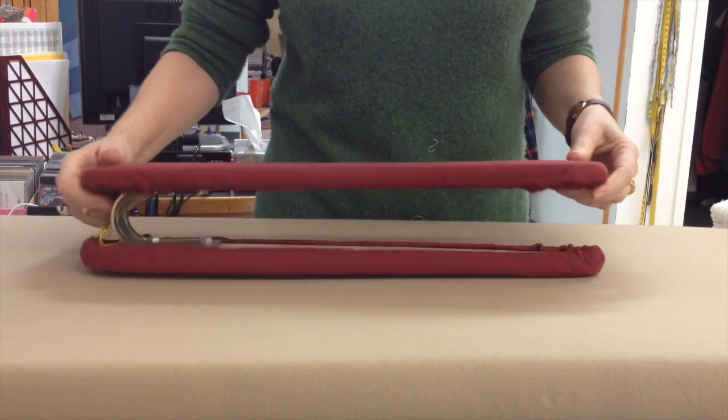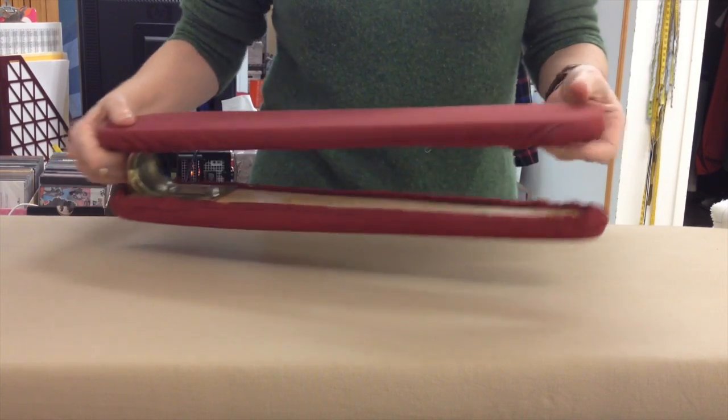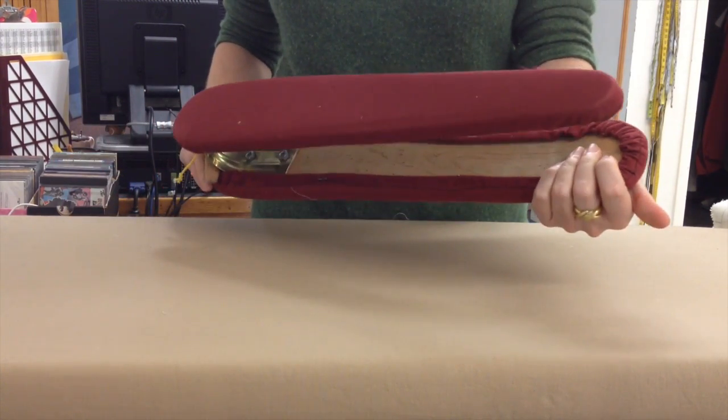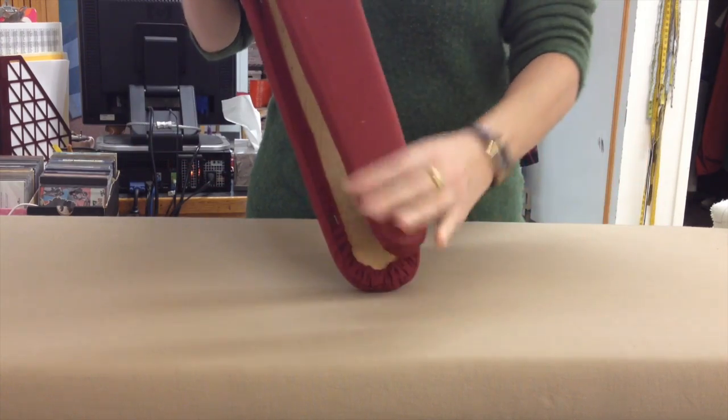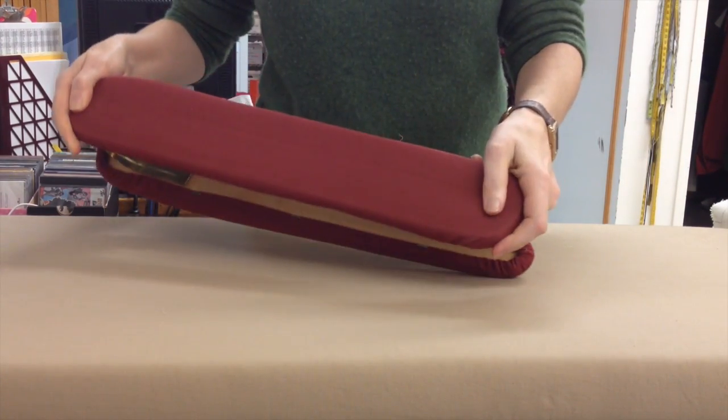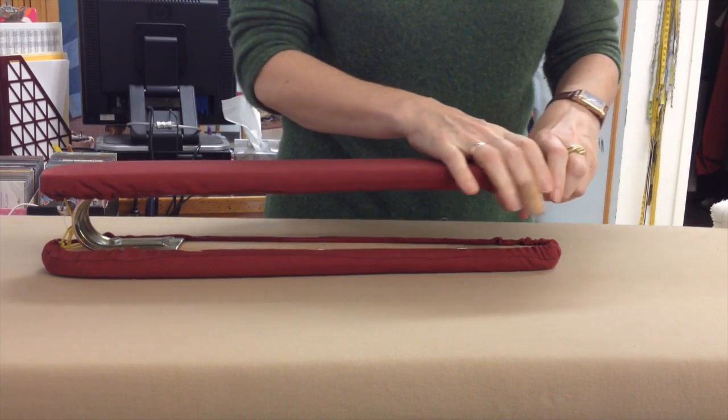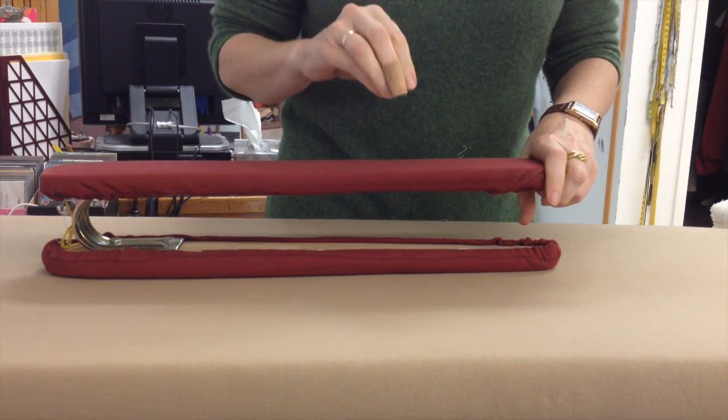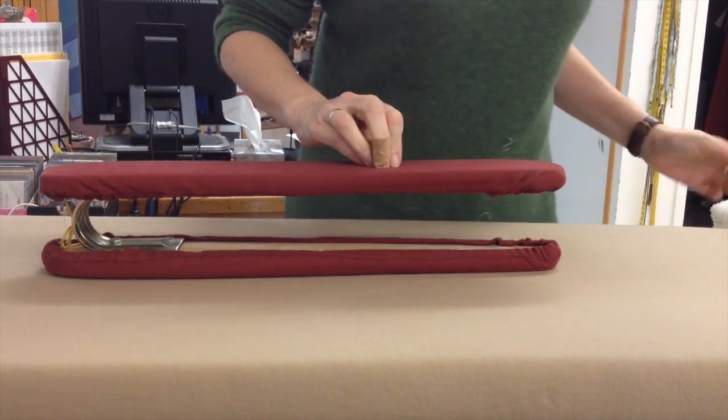There are many tools you can use at the ironing board. This particular one is a sleeve board. It's got a narrower shape on one side than the other. And what that can do is isolate the part of the garment that you're wanting to press.